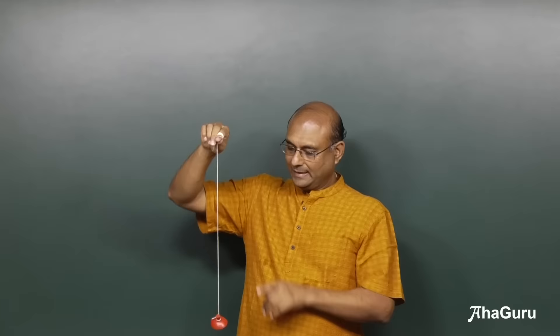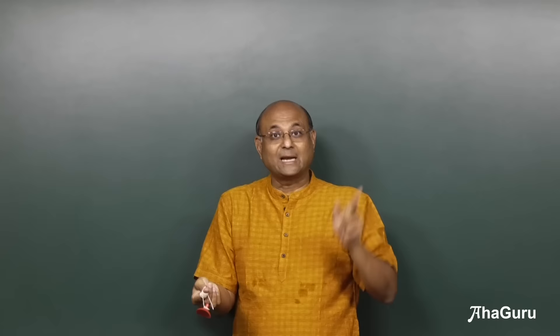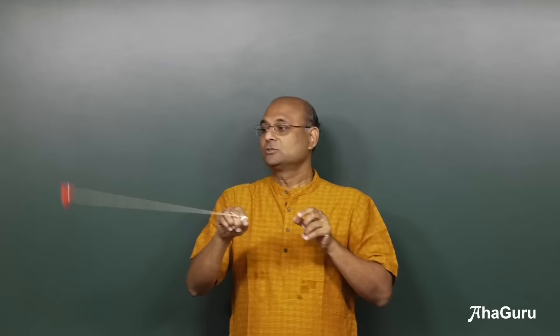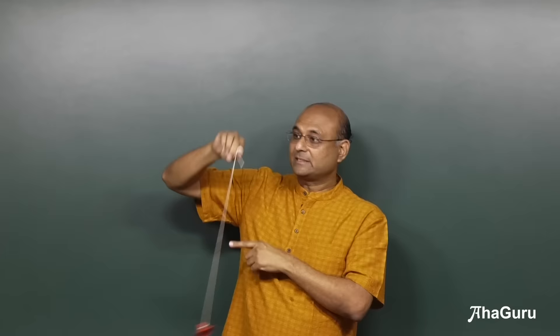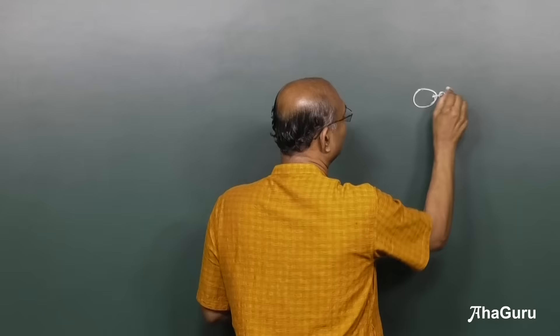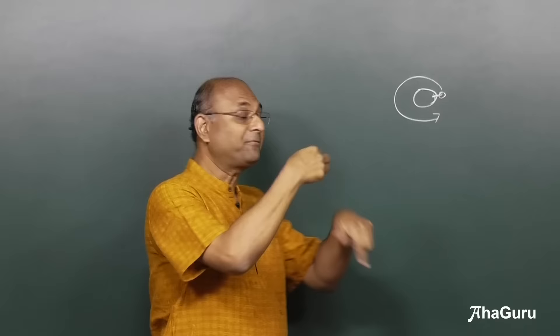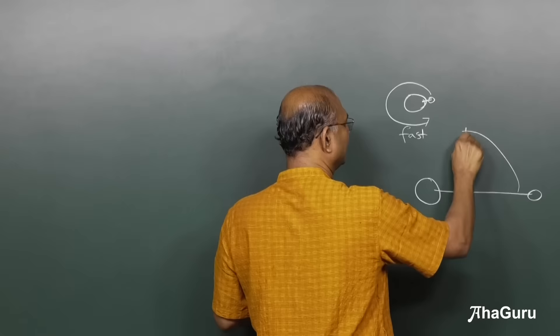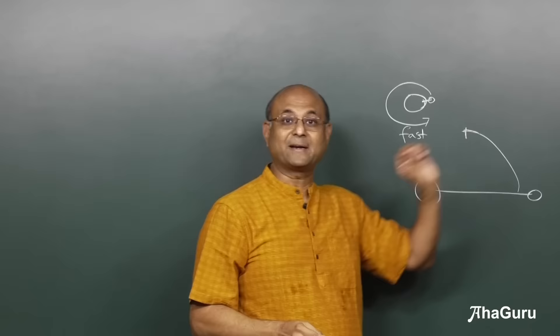Let's look at an object hanging from a rope. When I make it spin and decrease the length, you can see the speed increases — the object gets closer and spins faster. If I reverse it and increase the length, it becomes slower. So when the length decreases, speed increases, and when the length increases, speed decreases.